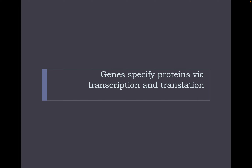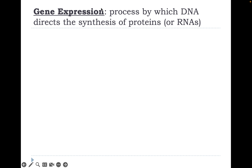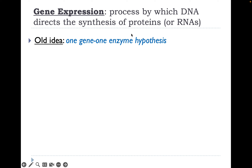Genes specify proteins by transcription and translation. Gene expression is the process by which DNA directs the synthesis of proteins or RNAs. We used to think that there was one gene to produce every enzyme — an enzyme, by the way, is a protein that catalyzes a chemical reaction in living cells. The old idea was there was one gene that coded for one protein.